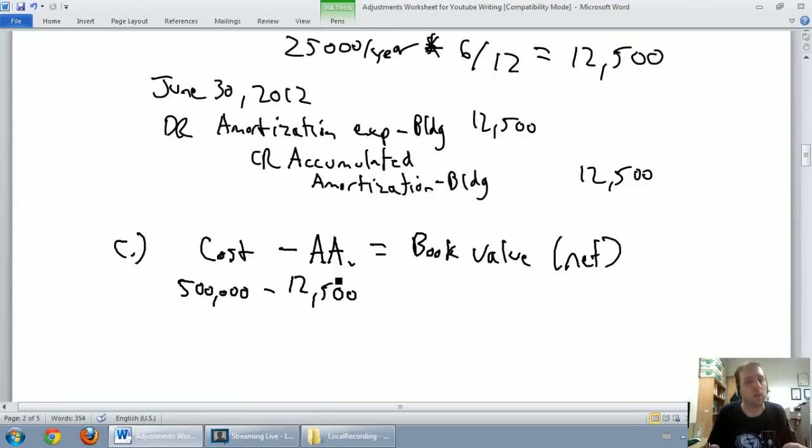So, the reason it's called a contra-asset is because it's a credit account, but most assets are debits. Well, all assets are debits. So, the fact is, we always credit accumulated amortization, but we still put it with the assets. In other words, it's there with the assets, but it works against the assets, and it's minus from the assets. So, we call that account a contra-asset because it works against the assets.